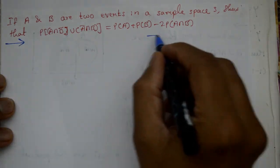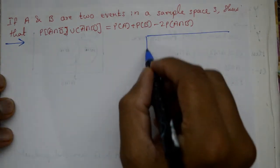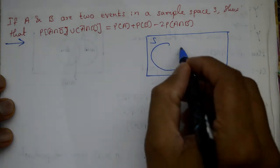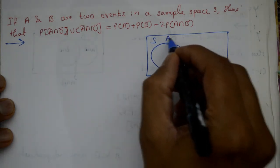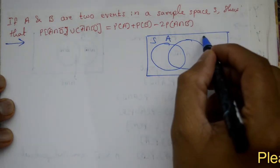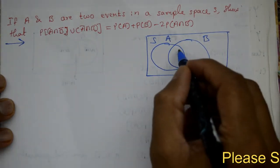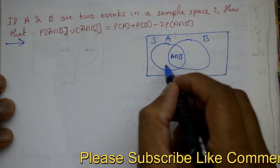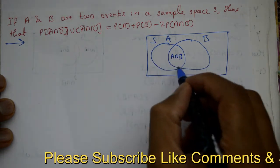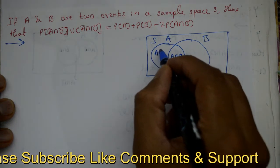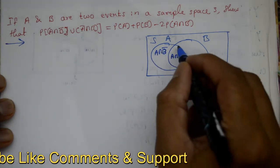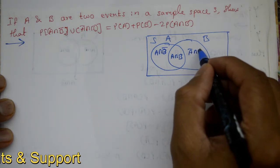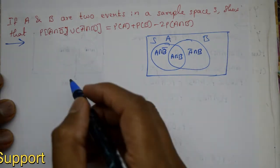Now solution. Is there diagram nikaalenge. A sample space S, set A ho gaya, set B ho gaya. Center ka portion A intersection B hota hai, A portion hota hai A intersection B bar aata hai, aur A bar intersection B aata hai.